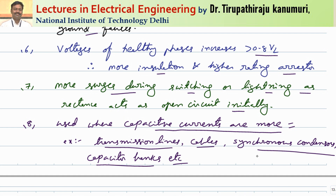I hope reactance grounding is completely clear. In the next class, we are going to see Petersen coil grounding, also called resonant grounding, where the coil is tuned so that the fault current exactly compensates the capacitive currents, eliminating problems and transients in the system. If you still have any queries, you can leave your comments in the comment section below. Thank you very much.